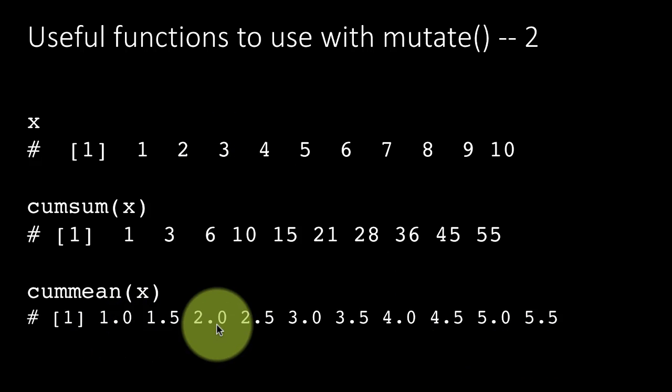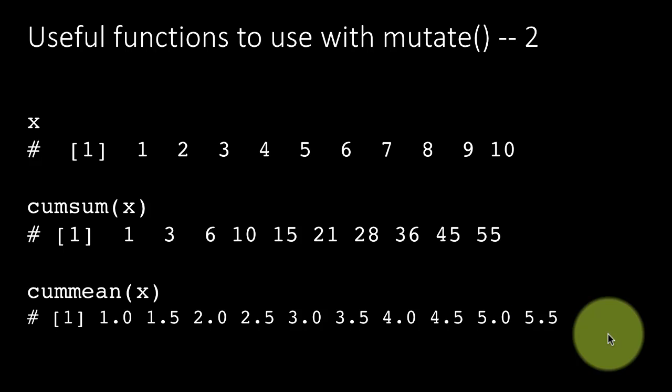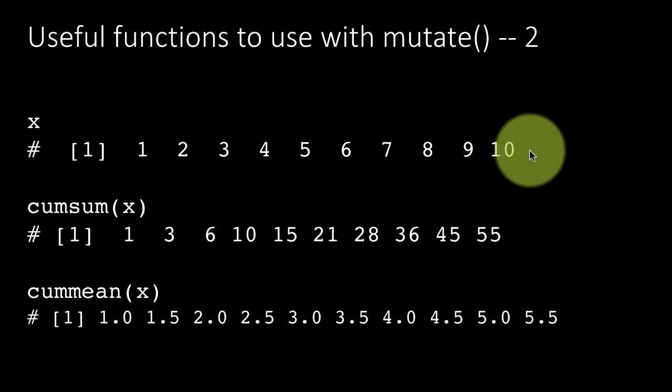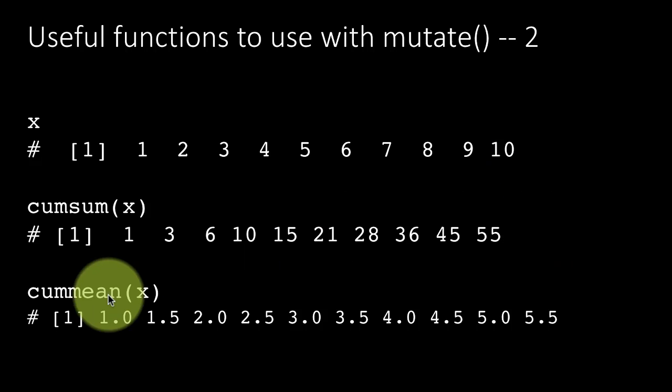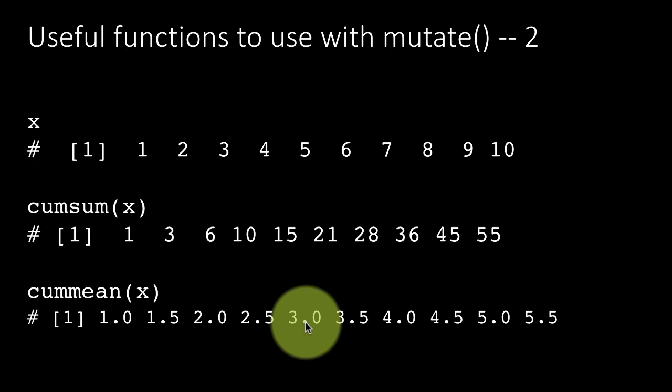So you get the sequence 1, 1.5, 2, 2.5, 3, 3.5, 4, etc. So cumsum is just a running total. Cummean is the cumulative mean, which is the mean at any particular point starting from the beginning.